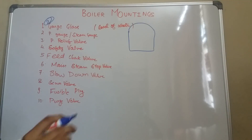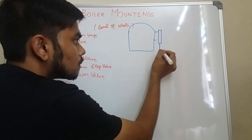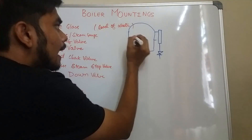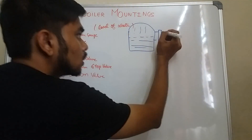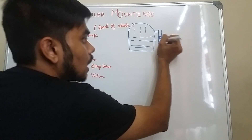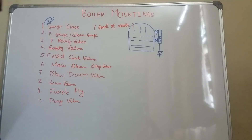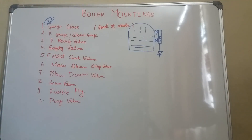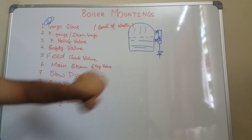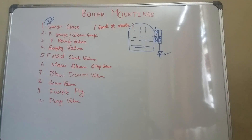Now how to correct that gauge glass which is showing wrong readings? This is your gauge glass — this is the level of water and here is your steam. There will be two valves here. Why will there be an anomaly? Due to some sediments present inside the water which have come over here.